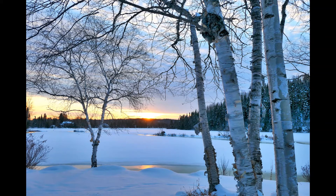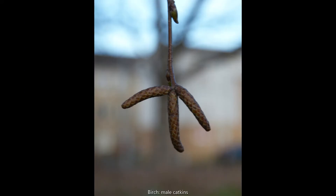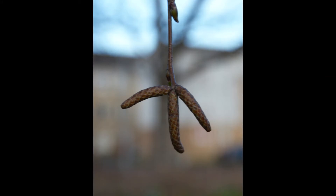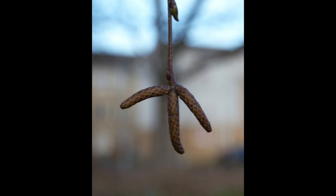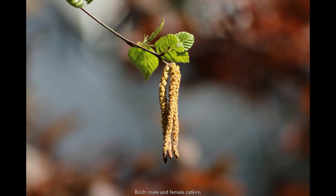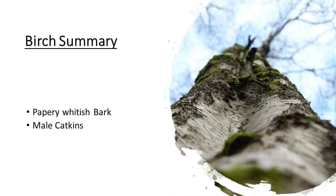Both male and female flowers can be seen on the same tree. The male catkins will appear well before the females — the males appearing in autumn and hanging down, waiting for the females to arrive in April, which grow upwards. Birch has alternating buds with no terminal bud, but since the other features are so distinctive, we don't need to look any closer.